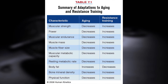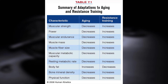Here is how resistance training combats aging — it directly reverses it. In one column, these are all the things that happen with aging: decreases in muscular strength, power, endurance, size, muscle fiber size, muscle metabolic capacity, and resting metabolic rate — and the only thing that increases is body fat. Bone mineral density decreases, physical function decreases. However, resistance training does the literal opposite: it increases everything except body fat, and it can decrease body fat as long as you couple it with a decent dietary intake.